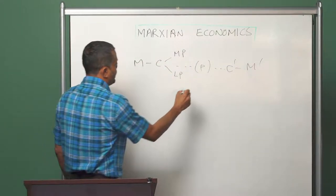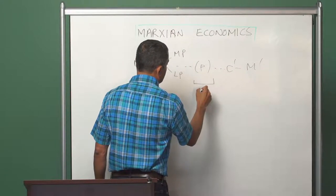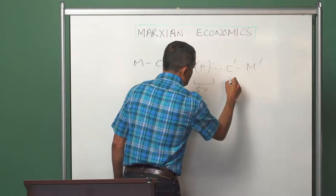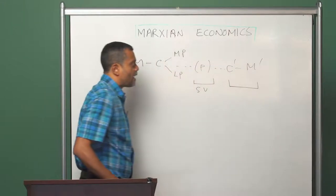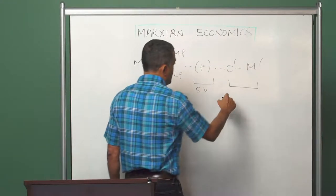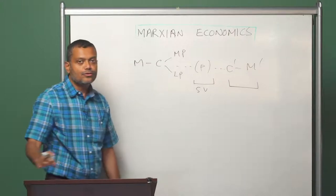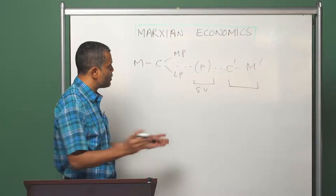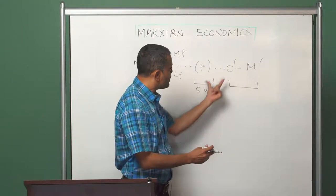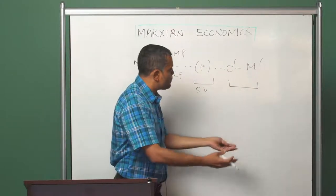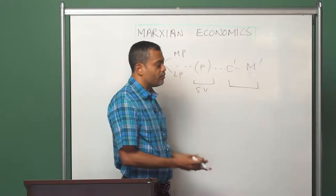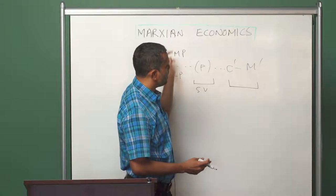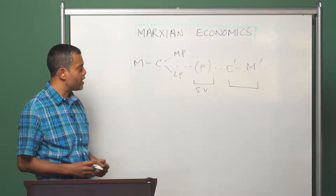In the circuit of capital, surplus value is generated and will be realized only through sale. Unless the surplus value is realized through sale, the circuit of capital gets interrupted, because unless the commodity form transforms itself into the money form — meaning, unless the commodities are sold for a sum of money — the next cycle of the circuit of capital cannot begin.